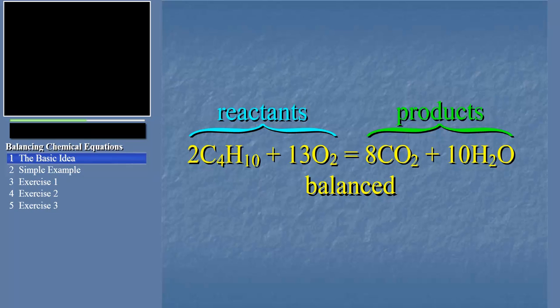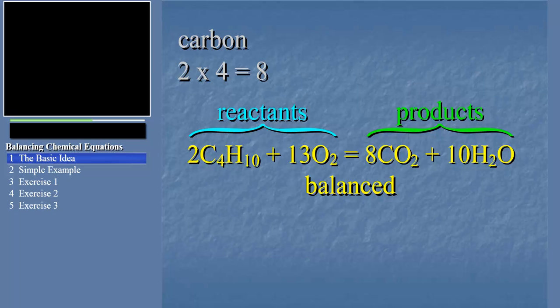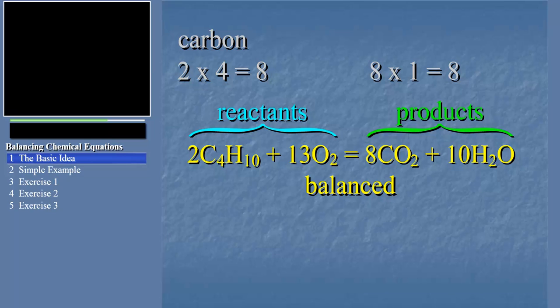Let's check that this is true for this equation. We'll start with carbon. Among the reactants, each butane molecule contains four carbon atoms. Since two butane molecules are used in the reaction, there are a total of eight carbon atoms on the left side — the reactant side. On the right side, the only species containing carbon is carbon dioxide. Each carbon dioxide contains one carbon atom, and in the balanced equation we see eight carbon dioxide molecules, representing eight carbon atoms among the products. Therefore, we say the carbon atoms are balanced.